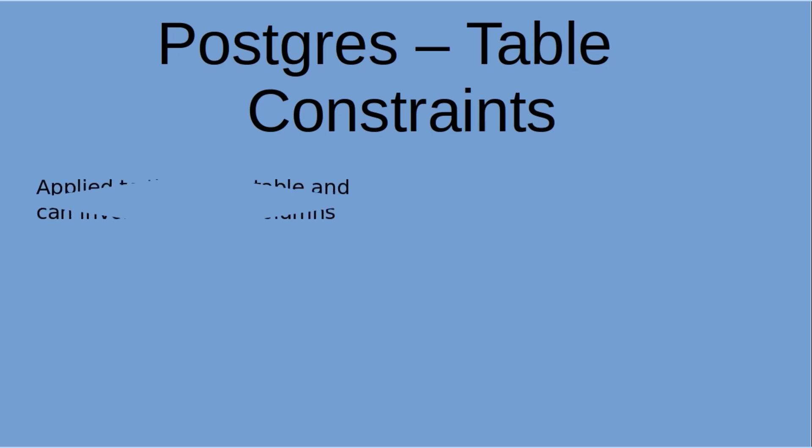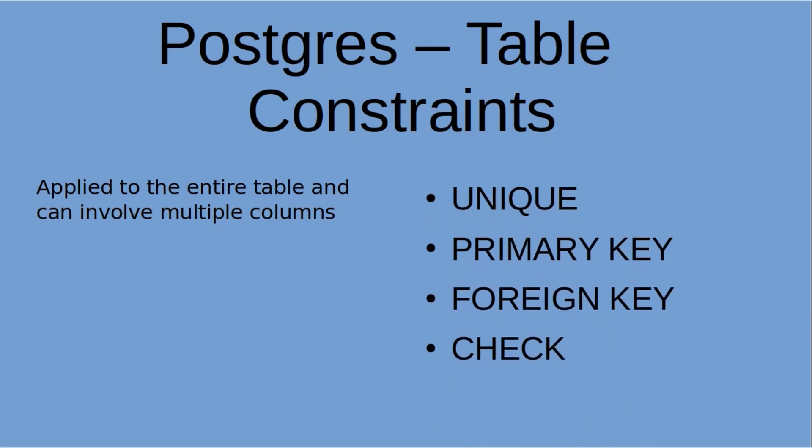There are two types of constraints we're going to be discussing today: table and column constraints. Let's start with table level constraints. They are applied to the entire table and can involve multiple columns. They are usually defined separately from the column definitions, usually at the end of the CREATE TABLE statement.